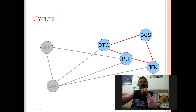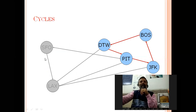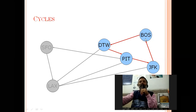Here we can see a few examples. The highlighted section creates a cycle in this graph. In another example, different stations are represented through nodes and communication channels through edges. Starting from BOS to DTW, then to PIT, then to JFK, and back to BOS — the sequence of these four nodes creates a cycle.